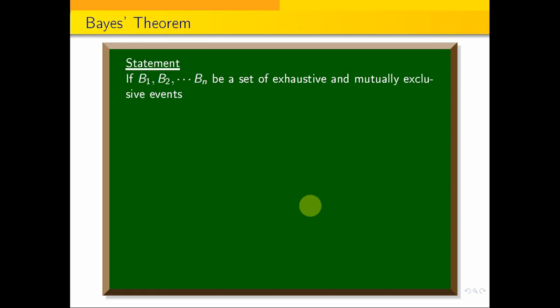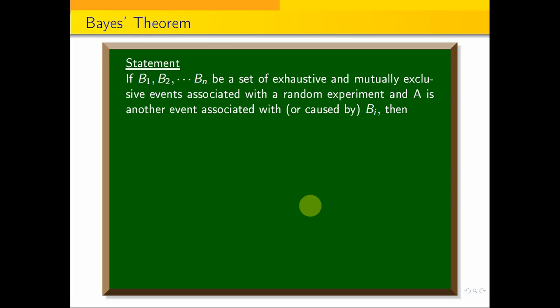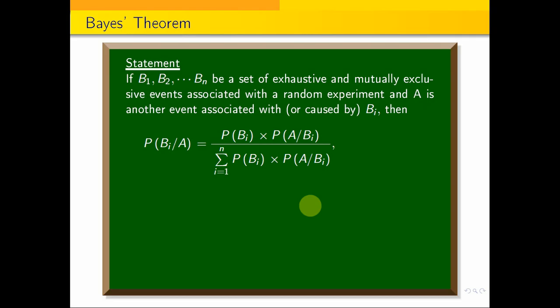Statement of Bayes Theorem: If B1, B2, ..., Bn be a set of exhaustive and mutually exclusive events associated with a random experiment, and A is another event associated with or caused by any of these Bi, then the probability of Bi given A is equal to P(Bi) times P(A given Bi), divided by the summation from i=1 to n of P(Bi) times P(A given Bi), for i = 1, 2, 3, ..., N.